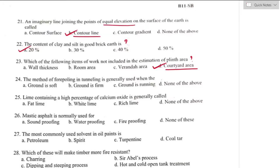Question number twenty-four: the method of forepolling in tunneling is generally used when? Forepolling method of tunneling is generally used when the ground is in a running condition. Option C is the right answer.